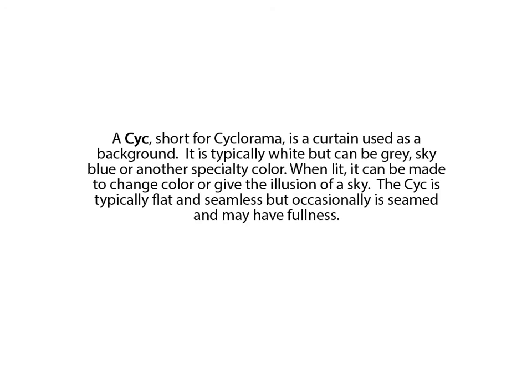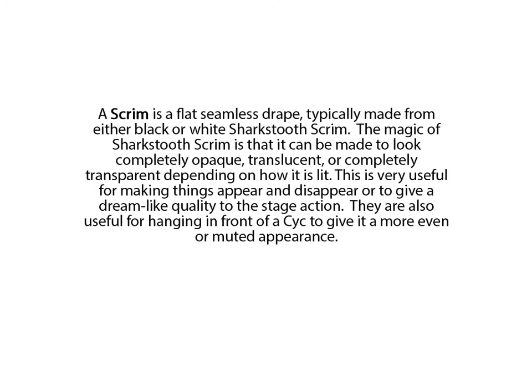Scrims and Sykes. A Syke, short for cyclorama, is a curtain used as a background. It's typically white but can be gray, sky blue, or another specialty color. When lit, it can be made to change color or give the illusion of a sky. The Syke is typically flat and seamless but occasionally is seamed and may have fullness. A scrim is a flat, seamless drape typically made from either black or white shark's tooth scrim. The magic of shark's tooth scrim is that it can be made to look completely opaque, translucent, or completely transparent depending on how it is lit. This is very useful for making things appear and disappear or to give a dreamlike quality to the stage action. They are also useful for hanging in front of a Syke to give it a more even or muted appearance.